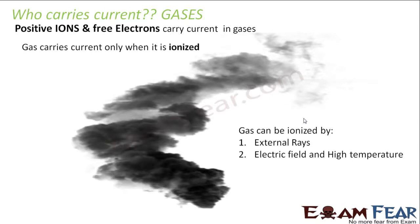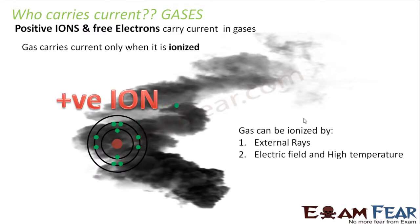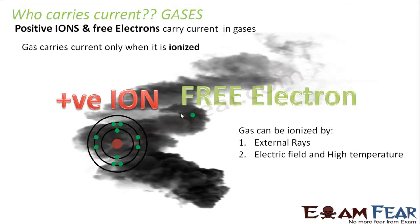How can you ionize a gas? You can ionize a gas by external rays, by increasing the temperature, or by applying some electric field. Let us suppose you take some molecule which has one electron in its outermost shell. When it is ionized, this electron is lost. When this atom loses one electron, it becomes a positive ion, and this electron which is lost then acts as a free electron. So this free electron and this positive ion carry current in gases.